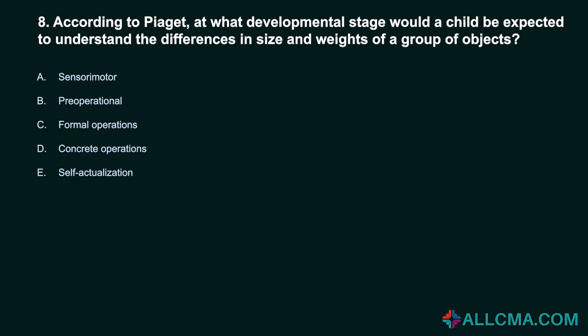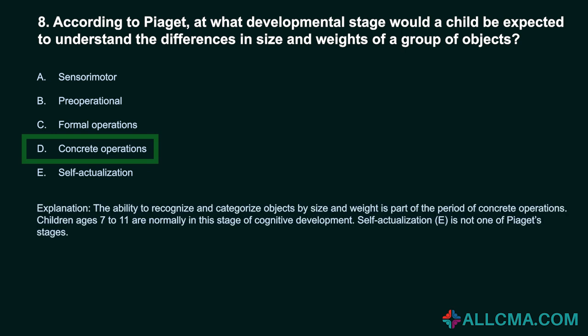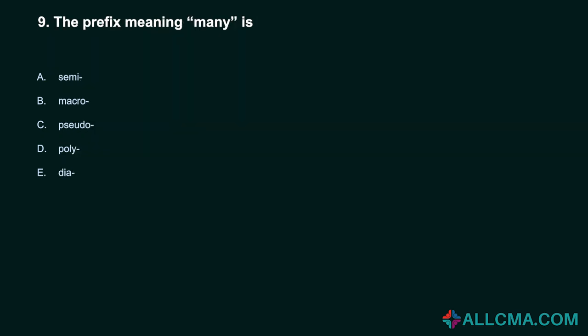Question 8: According to Piaget, at what developmental stage would a child be expected to understand differences in size and weights of a group of objects? a) sensorimotor, b) pre-operational, c) formal operations, d) concrete operations, e) self-actualization. Correct answer: D, concrete operations. The ability to recognize and categorize objects by size and weight is part of the concrete operations period. Children ages 7 to 11 are normally in this stage. Self-actualization is not one of Piaget's stages.